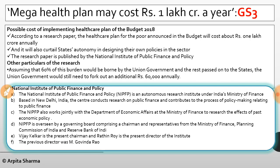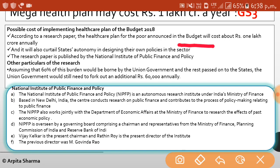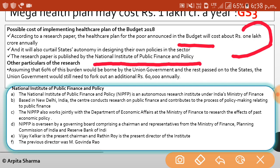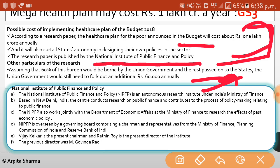The mega health plan announced in Budget 2018 may cost rupees 1 lakh crore a year, according to a research paper. This healthcare plan for the poor will cost about rupees 1 lakh crore annually and would also remove states' autonomy in designing their own policies in the sector. Assuming 60% of the cost burden is borne by the union government and the rest is passed to states, the union government would still need to fork out an additional rupees 60,000 crore annually.